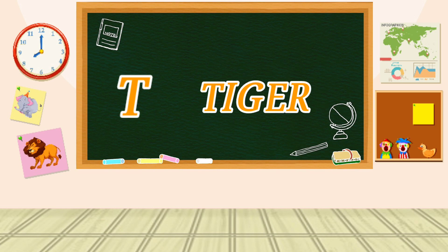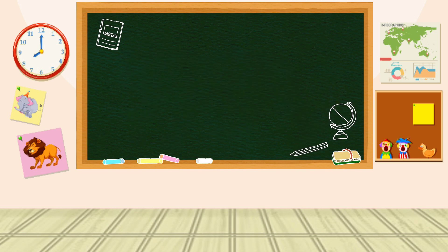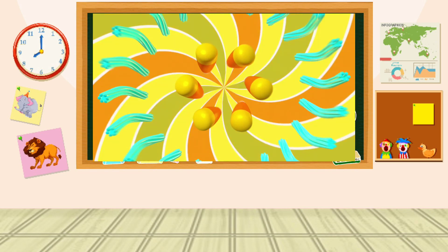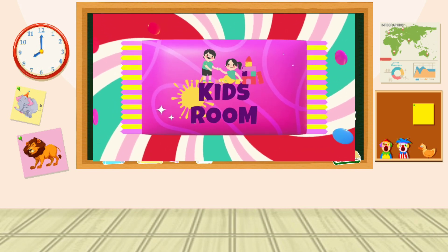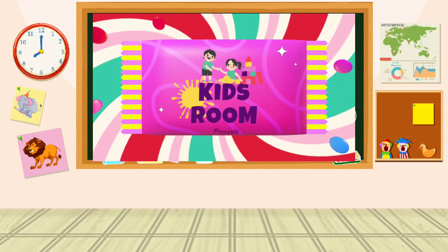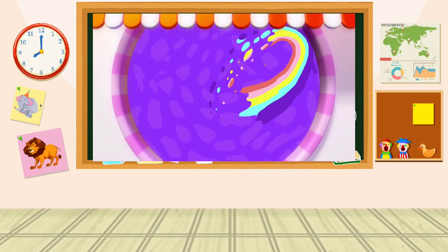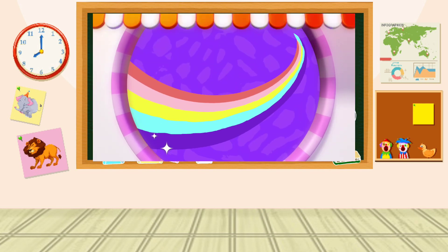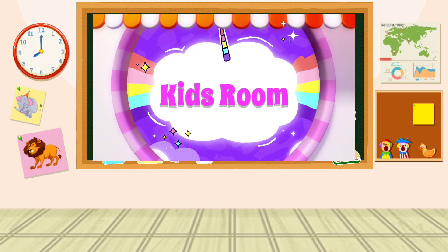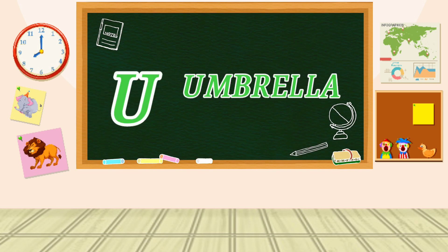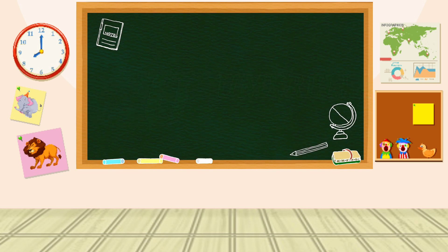T is for Tiger. T-T-Tiger, T-Tiger, T-Tiger. U is for Umbrella. U-U-Umbrella, U-Umbrella, U-Umbrella.